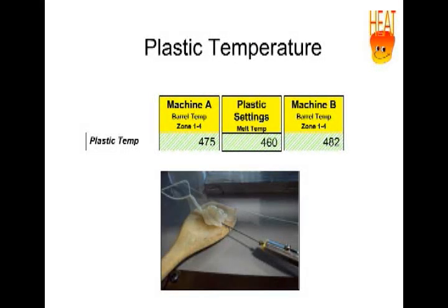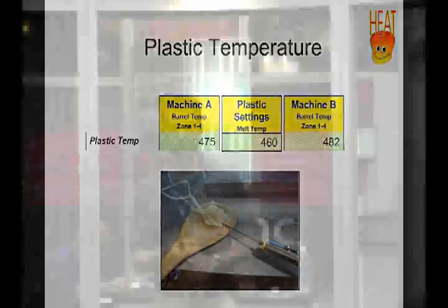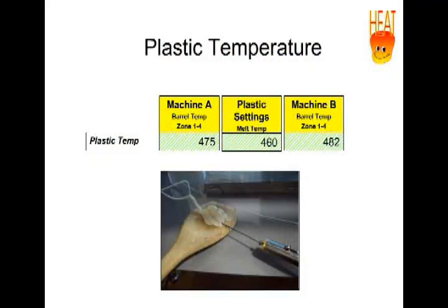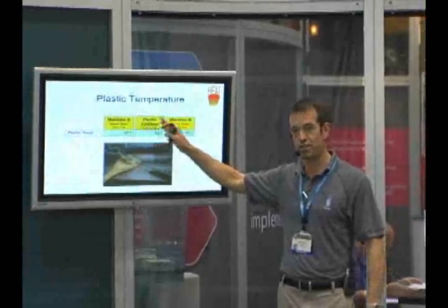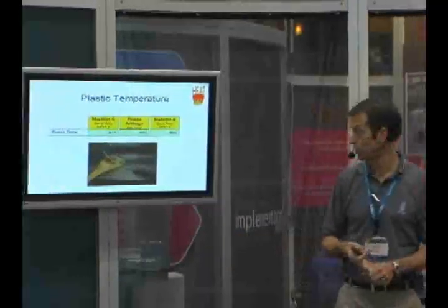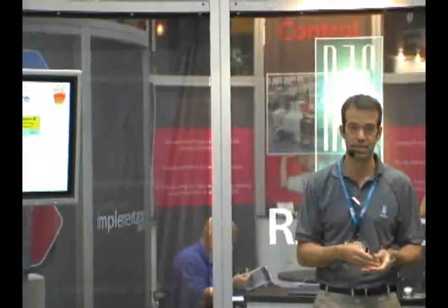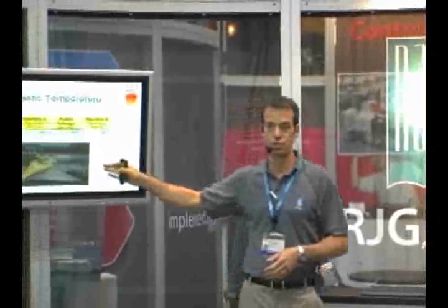What we have to work on now is developing a methodology that allows us to duplicate the melt temperature on two machines. This is part of the scientific molding training that RJG does — teaching a method where you can calculate the melt temperature regardless of the machine setting necessary, using a handheld pyrometer during purge and a specific methodology that allows you to consistently determine the effective melt temperature of the material, then using appropriate settings on the machine when you make that mold transfer to duplicate that information.